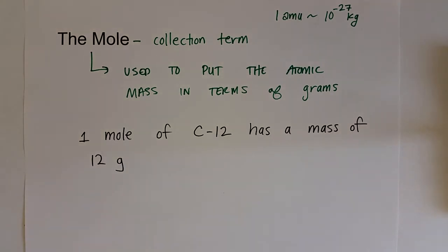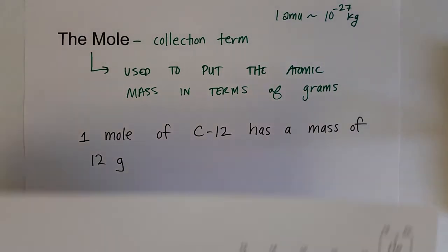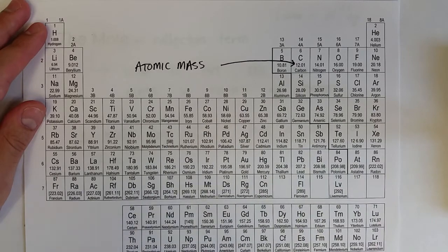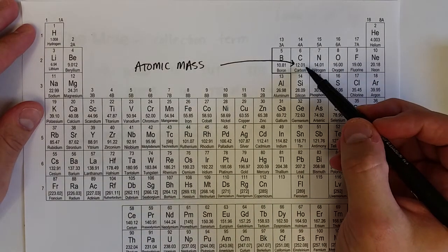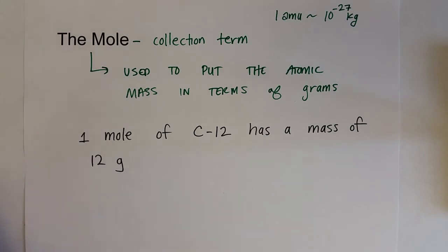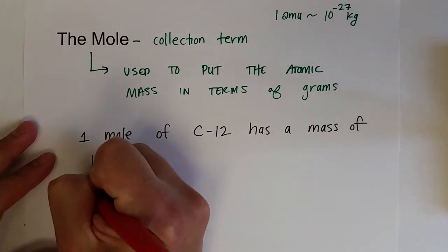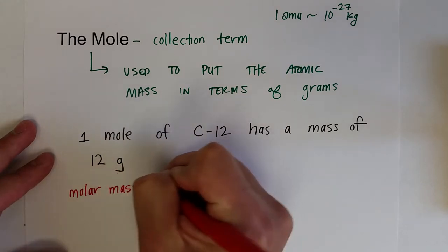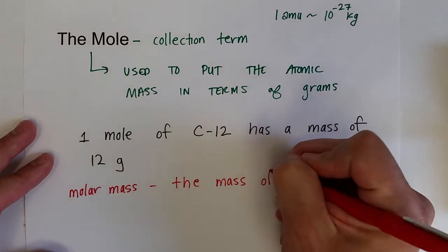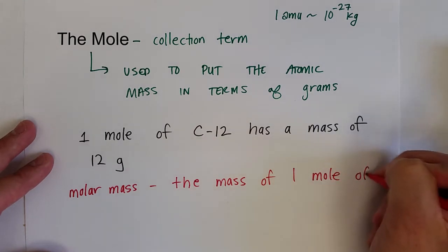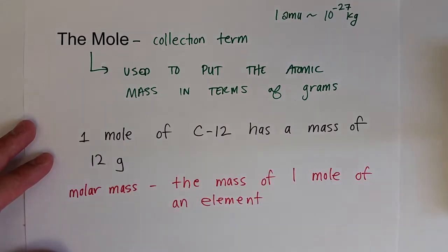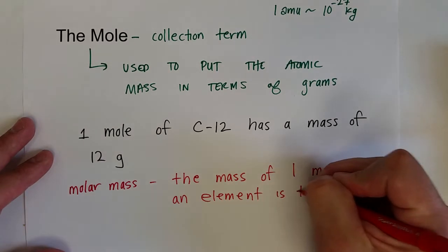Most of the time, we're just going to use the atomic mass of an individual element as what we're going to call the molar mass. On average, the atomic mass of all the isotopes of carbon is 12.01 amu's — that's what we'll use as the molar mass. The mass of one mole of an element is the atomic mass in grams.